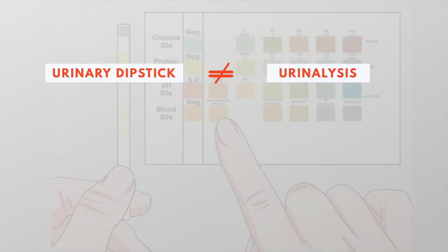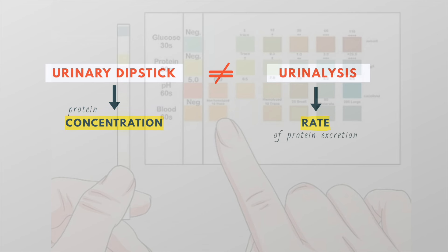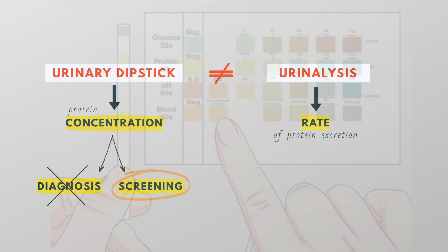A little side note: a urinary dipstick is not the same as a urinalysis. The urinary dipstick measures protein concentration rather than the rate of protein excretion, and therefore cannot be used to make the diagnosis of nephrotic syndrome. However, in most patients with nephrotic syndrome, the urinary dipstick will show a high level of albumin, so it is often used as a screening test while waiting for quantitative protein excretion studies.